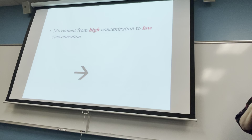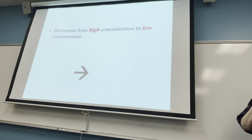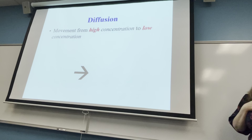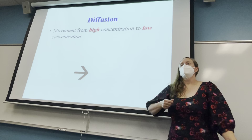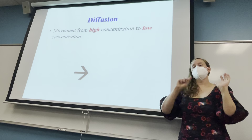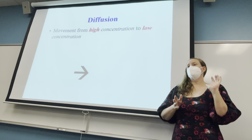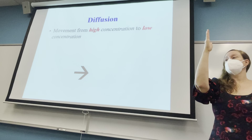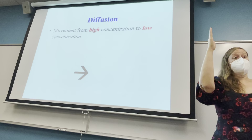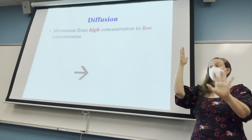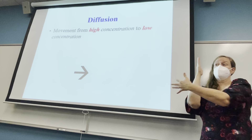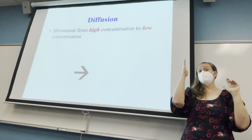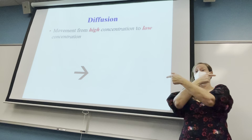One of the main ways that molecules and ions move around our body is through diffusion. A main principle of diffusion is that atoms move from high concentration to low concentration. When you have a concentration gradient across a membrane — like high oxygen in the alveoli and high carbon dioxide in the blood vessels — those molecules will diffuse in opposite directions across that membrane.